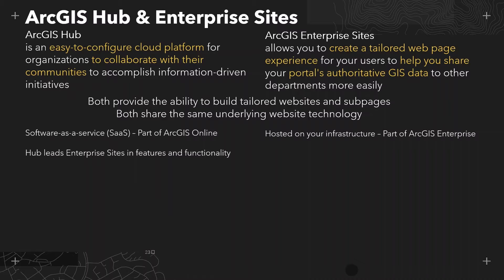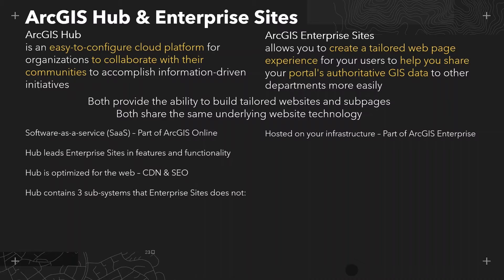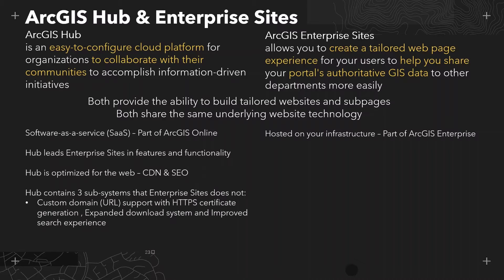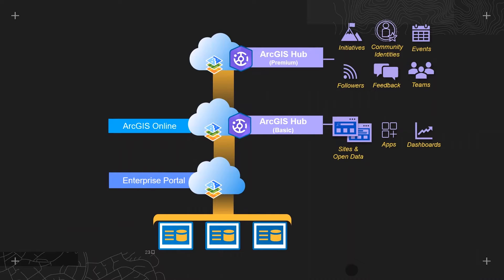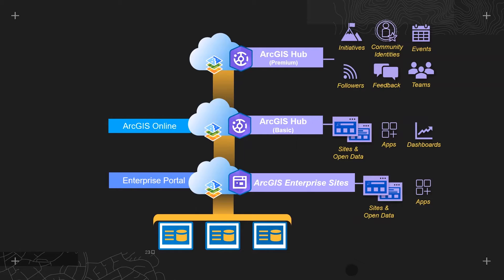ArcGIS Hub is a software as a service and is part of ArcGIS Online, whereas ArcGIS Enterprise Sites is hosted on your infrastructure and is part of ArcGIS Enterprise. Hub leads Enterprise Sites in features and functionality. It's optimized for the web and uses techniques like CDN and search engine optimization. It contains three subsystems that Enterprise Sites does not: custom domain URL support, an expanded download system, and an improved search experience. Hub also has additional licensable features for external community engagement. In summary, ArcGIS Hub is part of ArcGIS Online, has more functionality, and two licensing levels — basic and premium — while Enterprise Sites is part of ArcGIS Enterprise Portal and was introduced at 10.6.1.